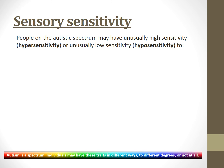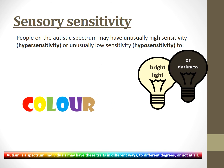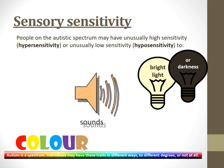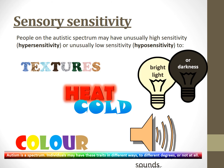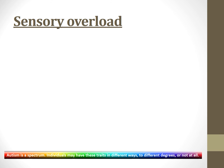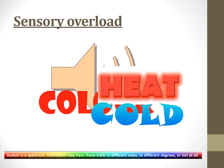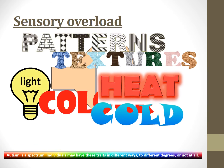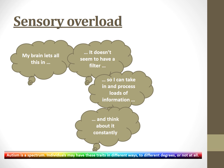Sensory sensitivity: people on the autistic spectrum may have unusually high sensitivity — hypersensitivity — or unusually low sensitivity, called hyposensitivity — to bright lights or darkness, colours, sounds, textures (whether clothing or furniture), and heat or cold. Autistic people may also experience sensory overload, because while all these sounds, colours, heat, cold, textures, light, patterns and feelings are coming in, the brain lets it all in — it doesn't seem to have a filter — so it can take in and process loads of information constantly, but it can become overwhelming.